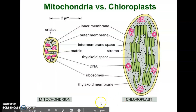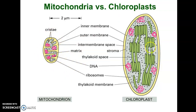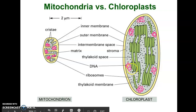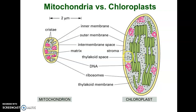The lumen of each thylakoid is connected with each other — we call that the thylakoid space. Because the thylakoid membranes can interact with each other, this is where we get those stacks of thylakoids, often referred to as stacks of pancakes, called a granum. Here's a picture of the mitochondria versus the chloroplast: the mitochondrion is much smaller, both have ribosomes and DNA, both have an inner and outer membrane, and both have a fluid-like center — matrix in the mitochondrion, stroma in the chloroplast. The extra structure the chloroplast has is the thylakoid space.